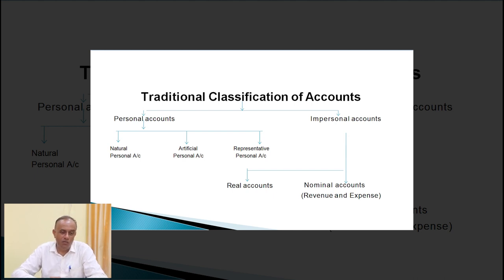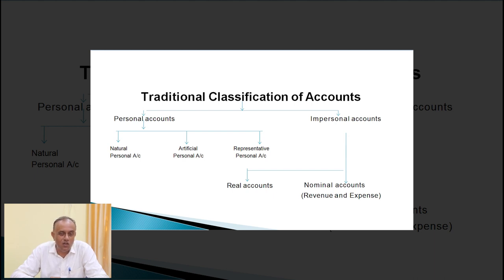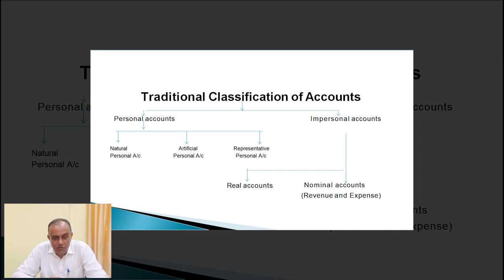As per accounting point of view, there are three types of person: natural, artificial, and representative. Another classification is impersonal account. As per the traditional approach, accounts are two types: personal and impersonal. Impersonal accounts are those accounts which are not personal. Impersonal accounts are of two types: one is real and another is nominal.